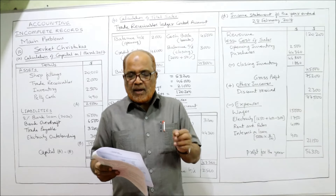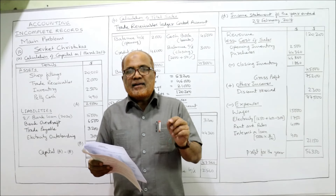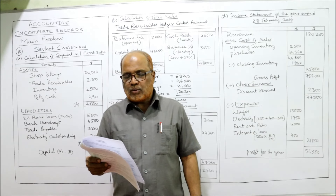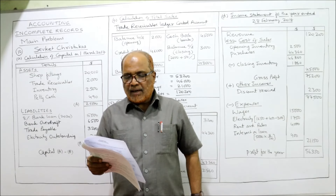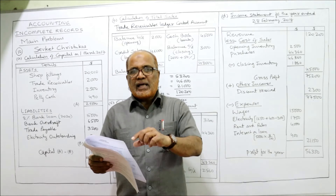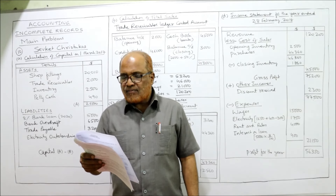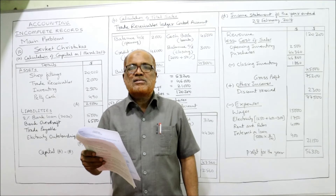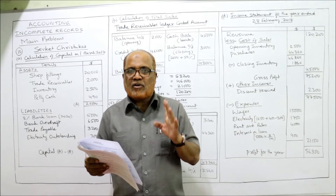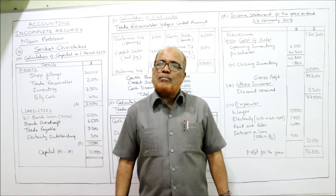The year ends on 28th February 2018. Assets and liabilities are given on 1st March 2017, which is the beginning of the period. The items listed include: 8% Bank Loan 2020, Bank Overdraft, Trade Payable, Trade Receivable, Electricity Outstanding, Petty Cash, Shop Fittings, and Inventory. Part A asks us to calculate Sevket's capital on 1st March 2017.